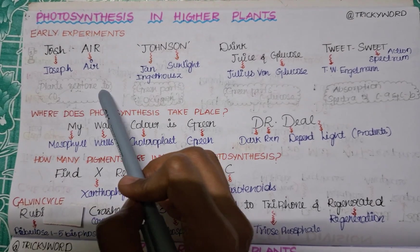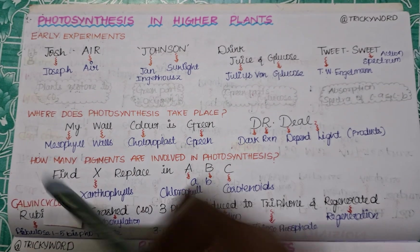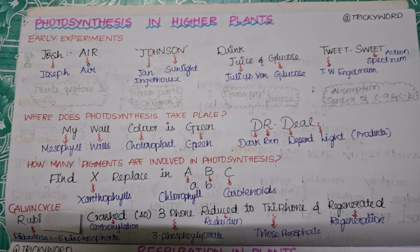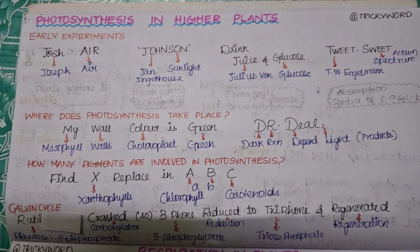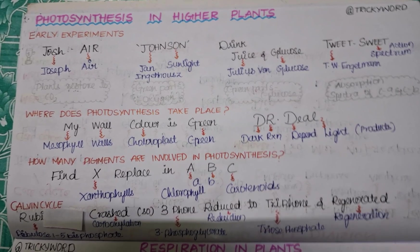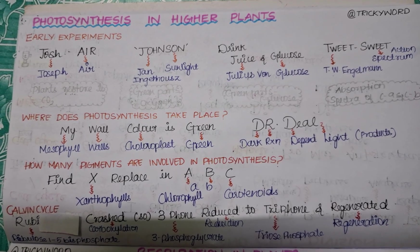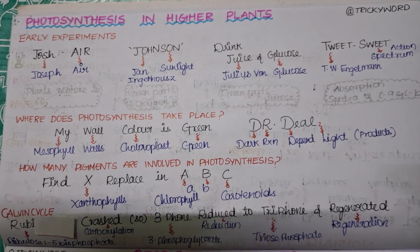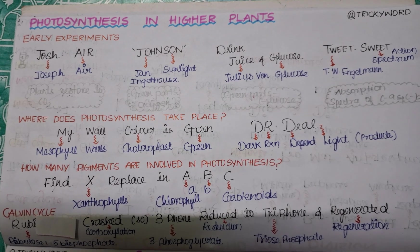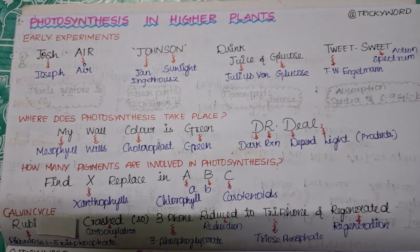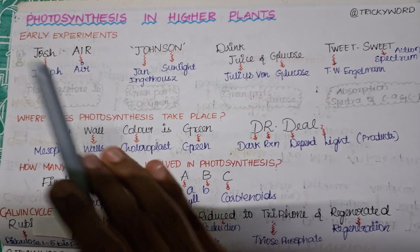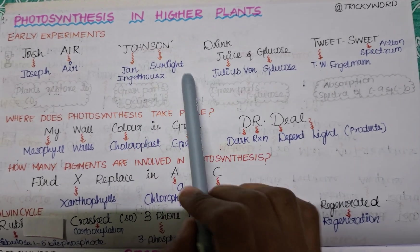Joseph Priestley concluded that plants restore CO2. You might have seen his experiment using a jar, where he keeps a mint plant inside a jar or bottle along with a rat. The gas released by the rat — CO2 — is absorbed by the plants. As humans and animals, we exhale CO2, and plants inhale CO2 and give us oxygen. That was the experiment done by him.